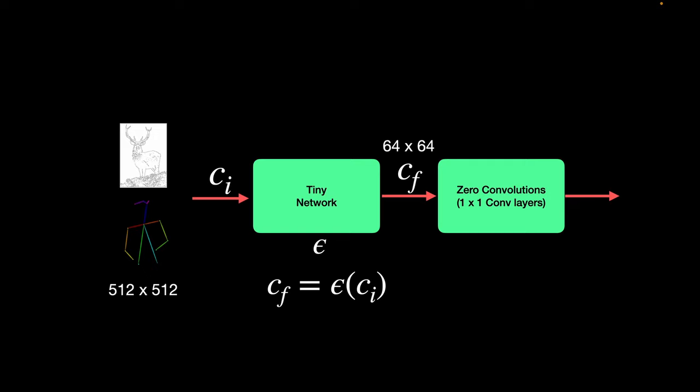So that was about converting the input conditioning image to the feature space cf. But whenever there are text prompts, ct, as conditioning inputs, they are taken care of by CLIP encoders, along with the position encoding for time, and are fed directly to the frozen weights of the model.